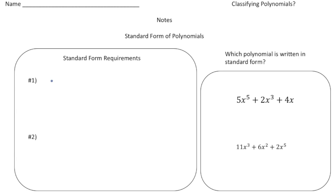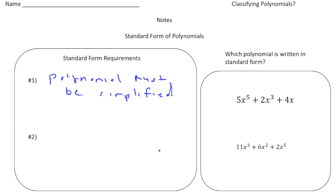So let's write down: the polynomial must be simplified. That's the first thing. The second thing — once the polynomial is simplified — you list the terms in order from highest degree to lowest degree. So I'm going to write down: highest degree to lowest degree.